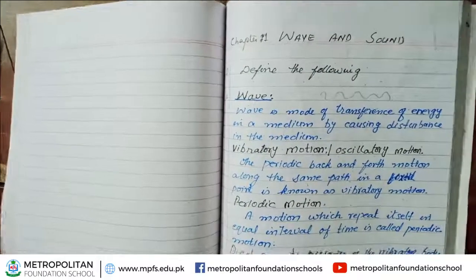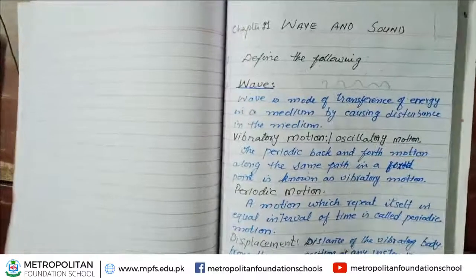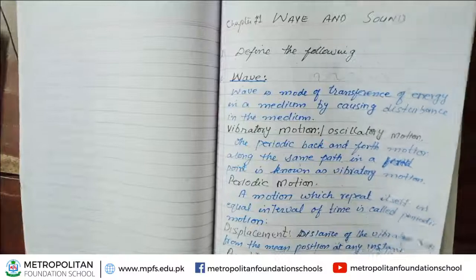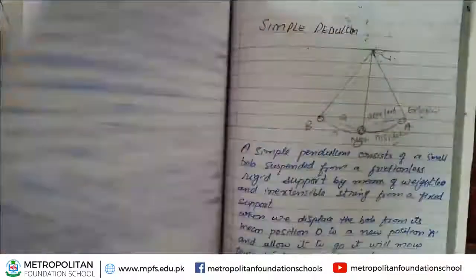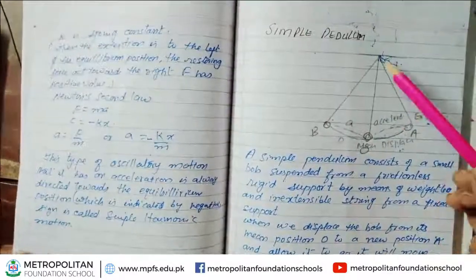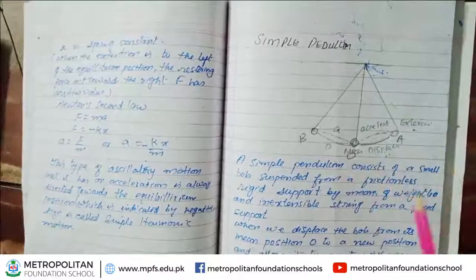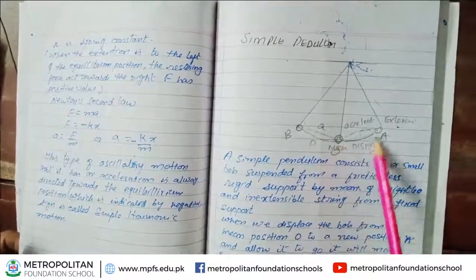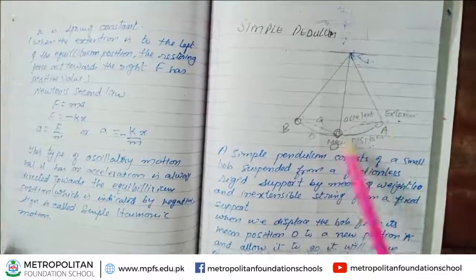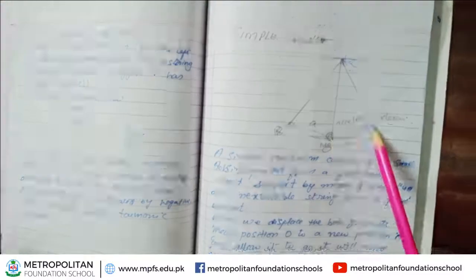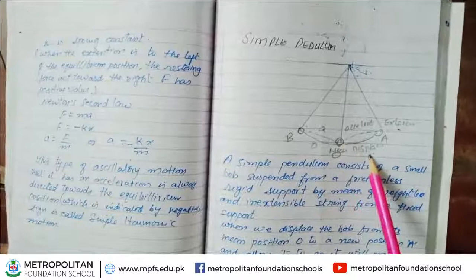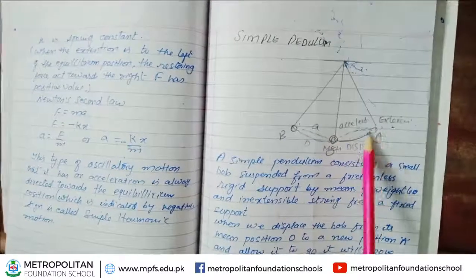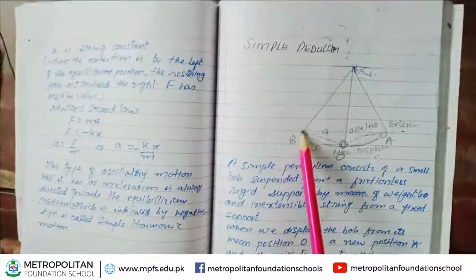We call it displacement. Displacement is the distance of a vibratory body from the mean position at any instant. I have given you the example of a simple pendulum to illustrate oscillatory motion. This is a pendulum bob. When we give it a push to the left, it goes to the extreme and comes back. We call that displacement.